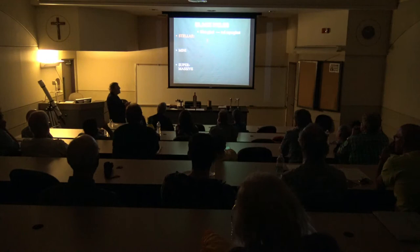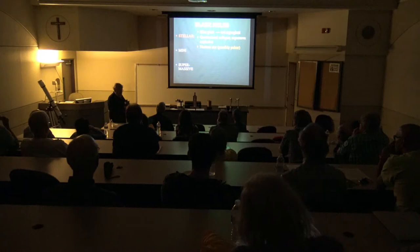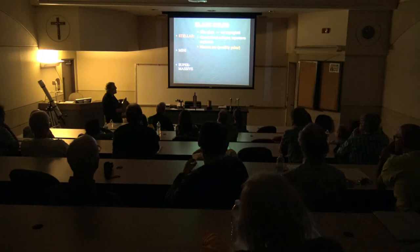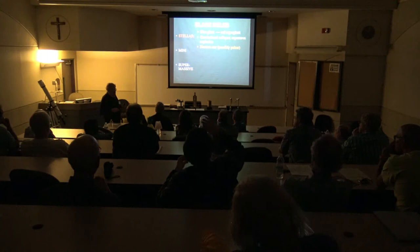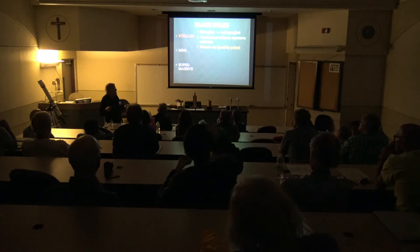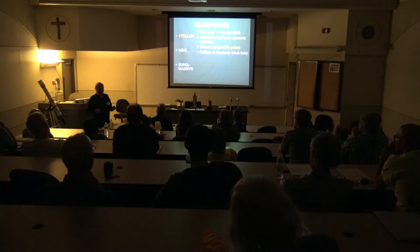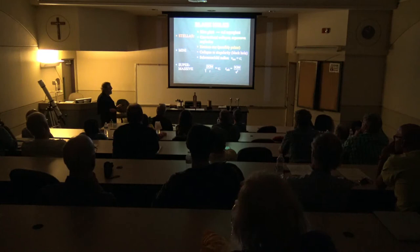Stellar black holes form when a blue giant star becomes a red supergiant, collapses into a supernova, and squashes its core into a neutron star — which we may observe as a pulsar. If the star is so massive that the neutrons can't support its own weight, it collapses further to a singularity — a black hole. For Cygnus X-1, the mass of the stellar corpse at the center is nine solar masses; the original star was probably 40 solar masses.